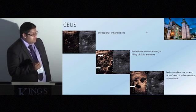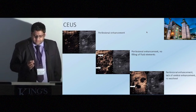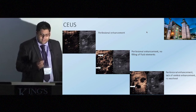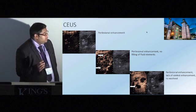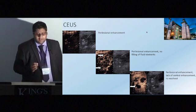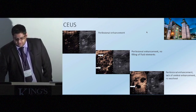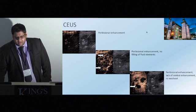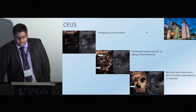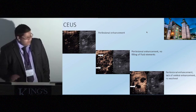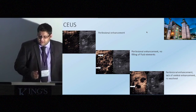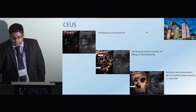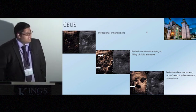These are our typical CEUS images of a liver abscess. You can see early arterial rim enhancement, and centrally there is no enhancement in the early phase — that persists in the late phase with a very similar appearance. In this case there's no washout. You can also see small areas within the fluid components representing septi.